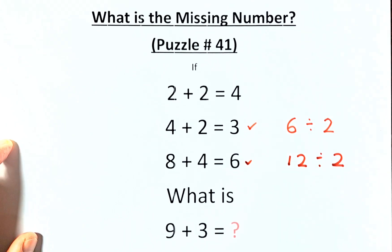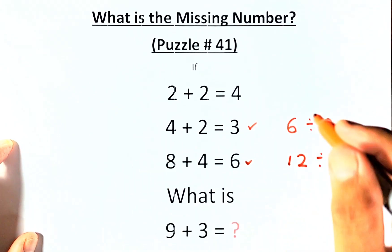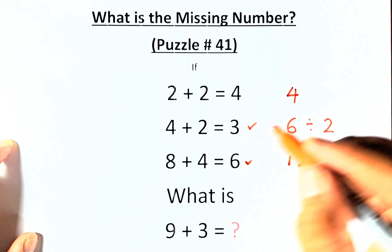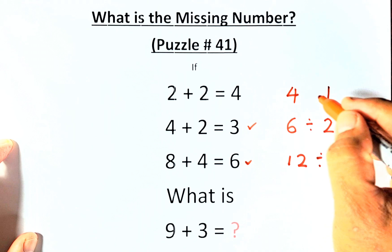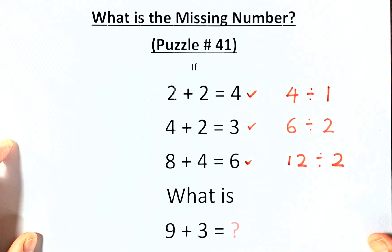So we look whether it applies to line number 1 too. So 2 plus 2 is 4. 2 divided by 2 is 1. And then 4 divided by 1, that equals to 4.